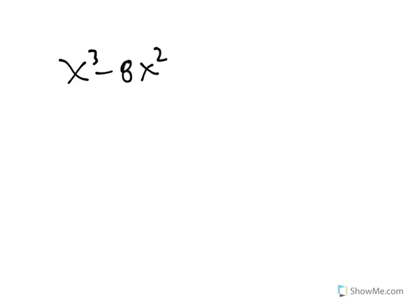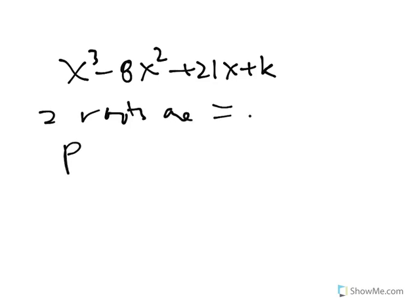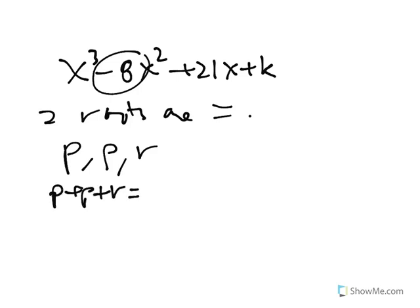Another configuration: x cubed minus 8x squared plus 21x plus k. It's not enough information until they tell us two roots are equal. So instead of p, q, and r, I have p, p, and r. The minus 8 gives us p plus p plus r equals positive 8, or 2p plus r equals 8, or r equals 8 minus 2p.